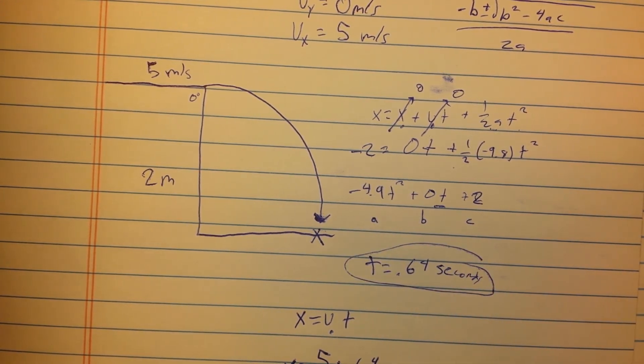So we know, in that short time, by using this quadratic equation, that the marble will hit 3.2 meters away, and it will take 0.64 seconds to get there. Thanks for watching, hope I helped you out.